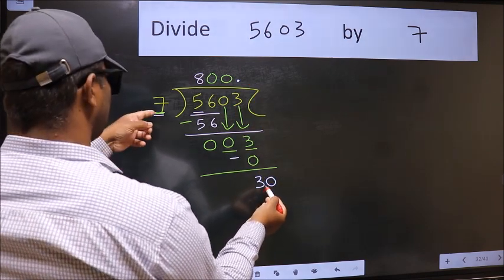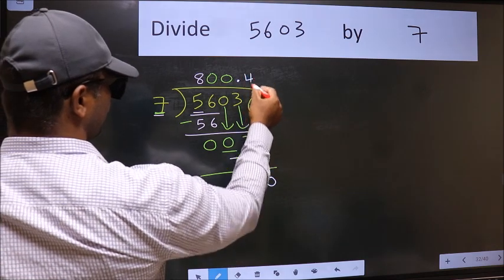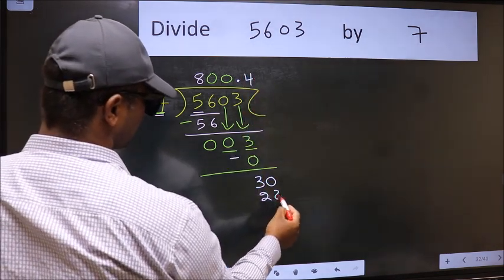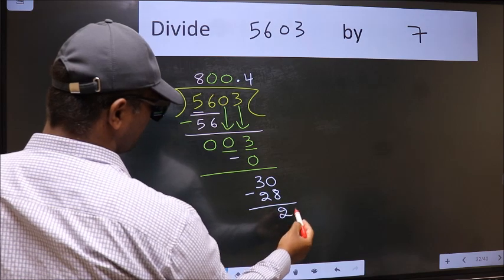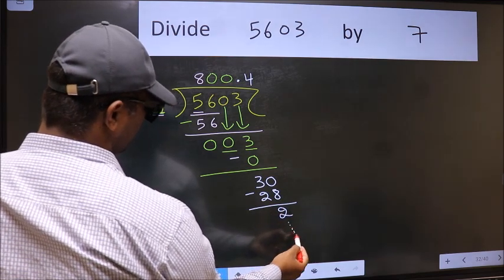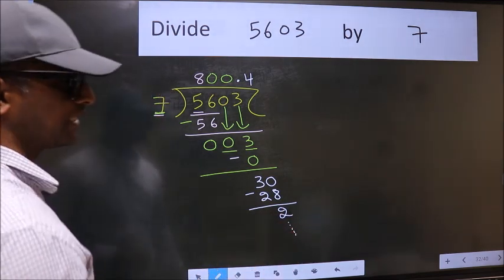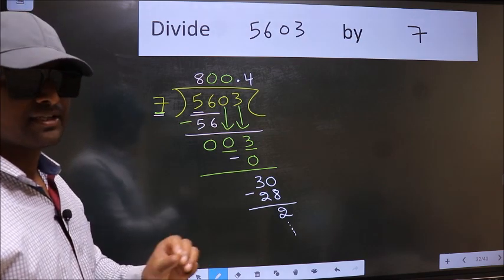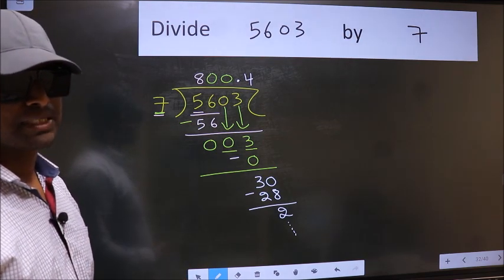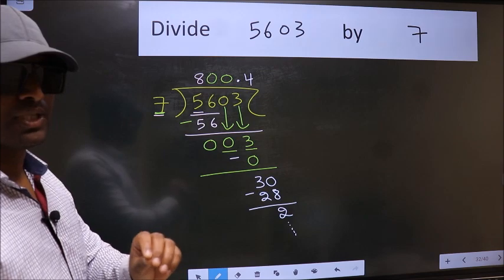A number close to 30 in 7 table is 7 fours 28. Now we should subtract. We get 2. And you continue the division. I am not doing that. Did you understand where the mistake happens? You should not do that mistake.